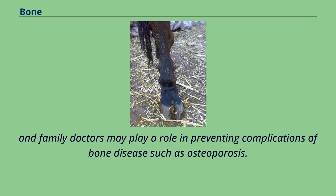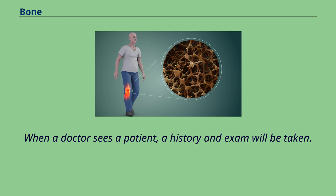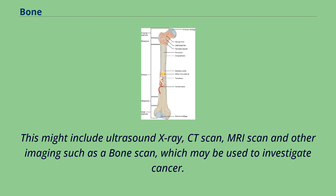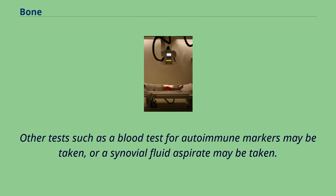When a doctor sees a patient, a history and exam will be taken. Bones are then often imaged, called radiography. This might include ultrasound, x-ray, CT scan, MRI scan, and other imaging such as a bone scan, which may be used to investigate cancer. Other tests such as a blood test for autoimmune markers or a synovial fluid aspirate may also be taken.